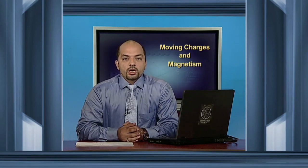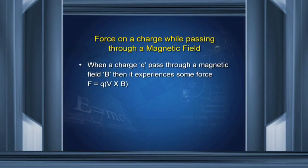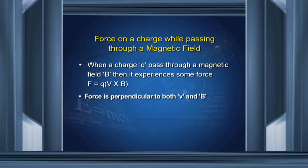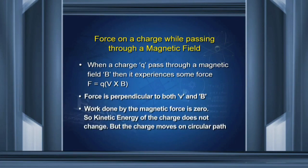Let us begin with the force on a charged particle while passing through the magnetic field. When a charged particle Q passes through a magnetic field B, it experiences some force F equals to Q into V cross B. This force is perpendicular to both the velocity V and the magnetic field B. So the work done by the magnetic force will be zero. As the work done is zero, by the work energy theorem, the kinetic energy of the charged particle does not change. However, as the direction of the charged particle is changing, the velocity is changing and under the action of this force, the charged particle moves on a circular path.